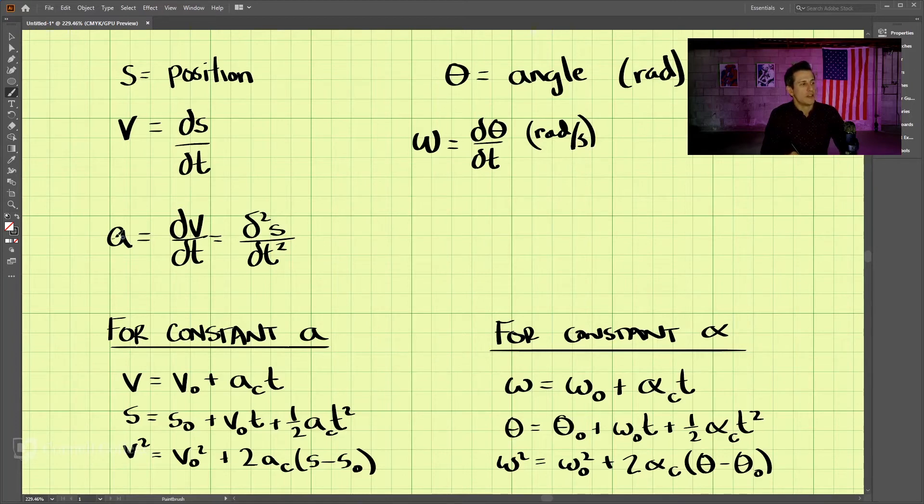We see that acceleration is the derivative of the velocity with respect to time. In the rotating frame, we have angular acceleration, denoted by the Greek letter alpha. That is equal to the derivative of the angular velocity with respect to time, which is also the second derivative of the angle with respect to time.